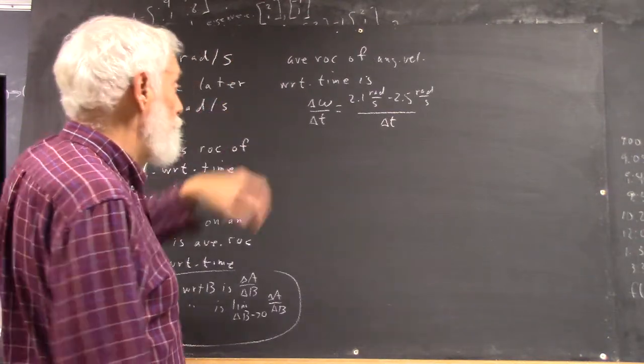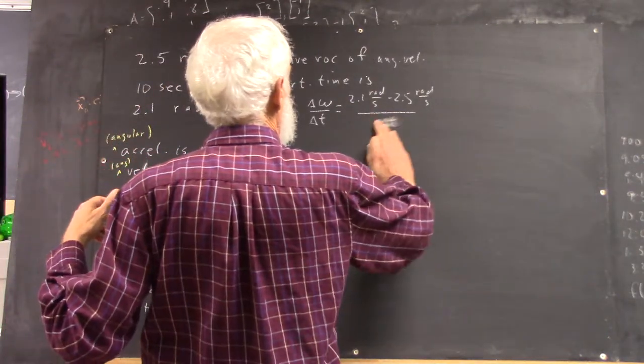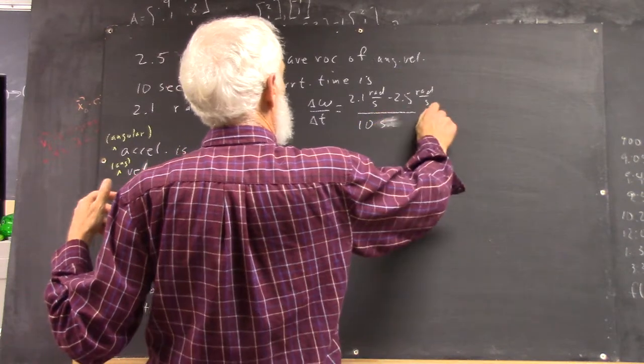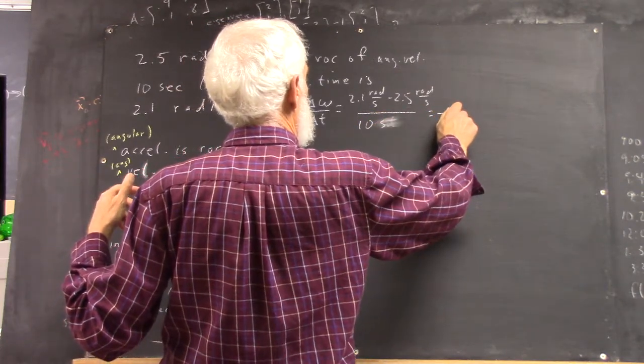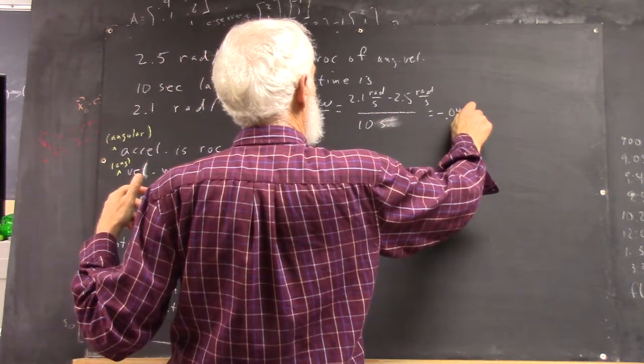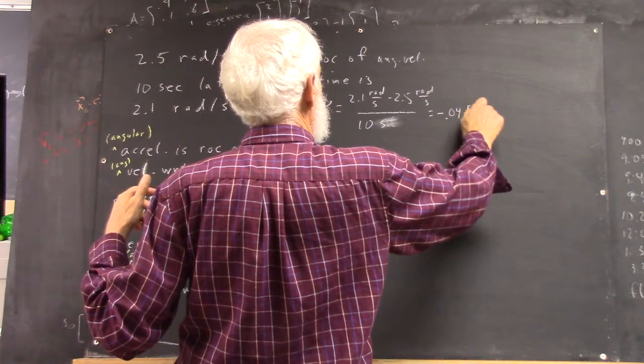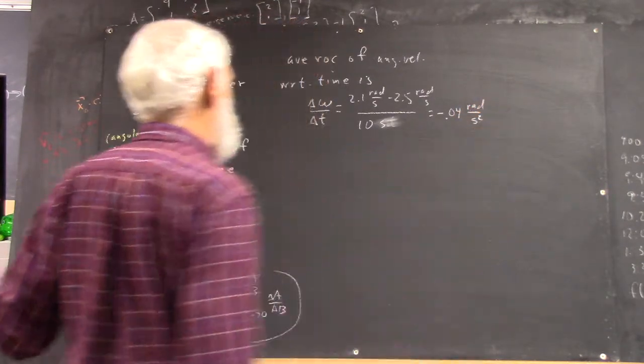We have this. And of course, it's delta T, and that's 10 seconds. So that equals negative 0.04 radians per second squared.